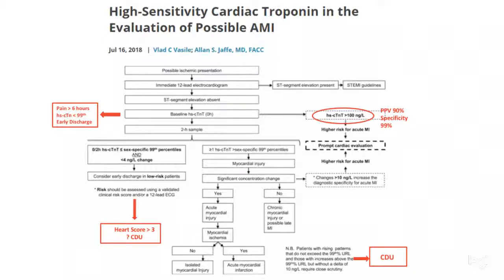Those patients in the gray zone may or may not be having a heart attack if the troponin only changed around four or five. If the patient has a troponin of more than 100 when they first come into the emergency room, the recommendation is to admit and get cardiac evaluation. With a troponin greater than 100, there is approximately 99% specificity and 90% likelihood that the test is truly positive and the patient has an MI.